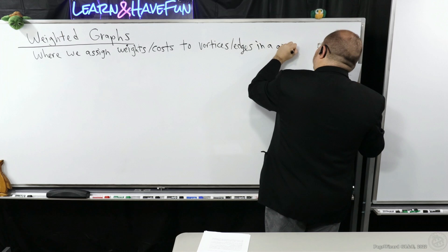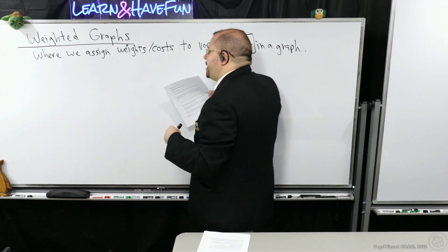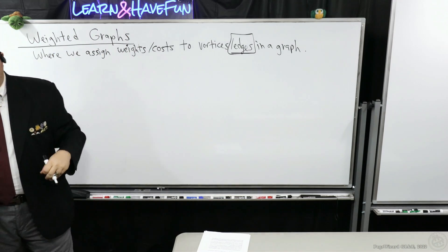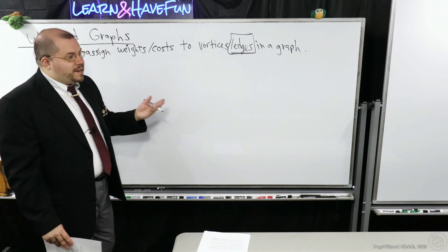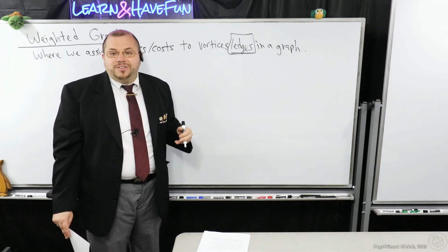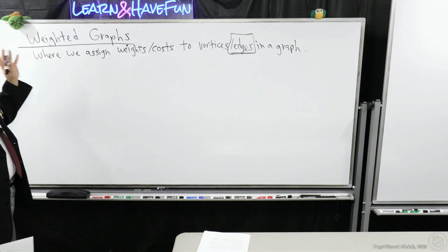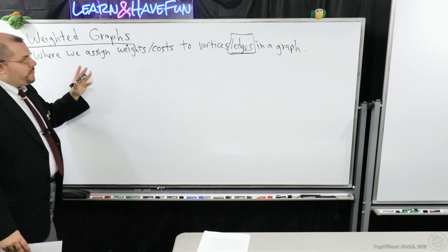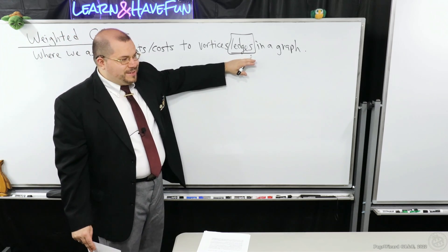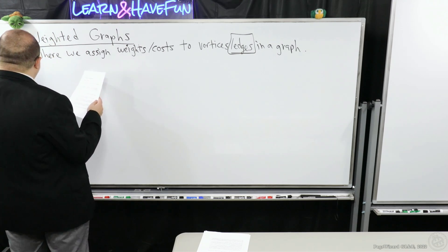We're going to focus only on when we assign weights or costs to the edges, but I must stress that there are ways you can study different graph theoretic problems by also assigning such things to the vertices too. But for our discussions, whenever I talk about a weighted graph, it'll always be on the edges just for the sake of clarity, unless otherwise stated.